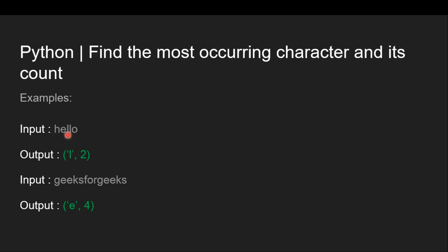Similarly, in the second example, we have input string as "GeeksforGeeks". The output should be e comma 4, as e is the most occurring character and its number of occurrences is 4.